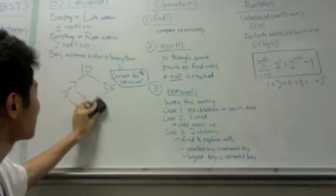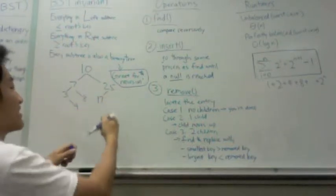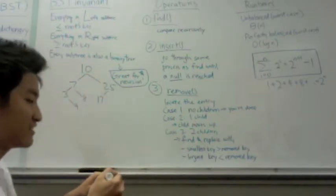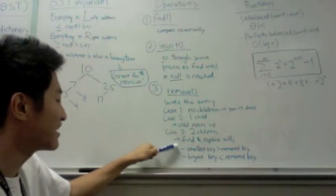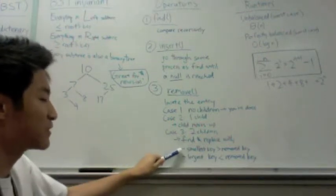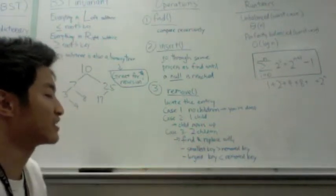Then I just move 17 up to where 12 was and still maintain the invariant because 17 is less than 25 and greater than 10. But if you have two children, then you'd have to find and replace with either the smallest key that's greater than the removed key or the largest key that's less than the removed key.